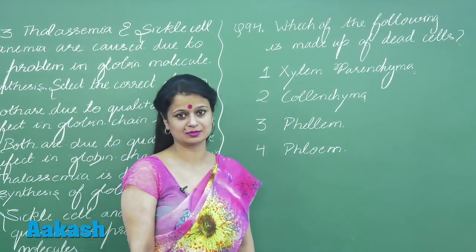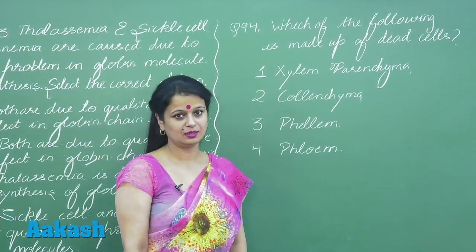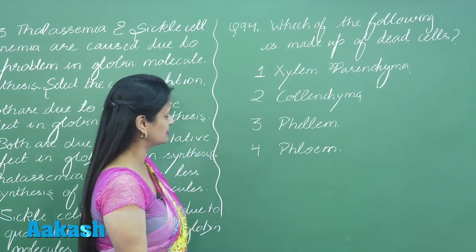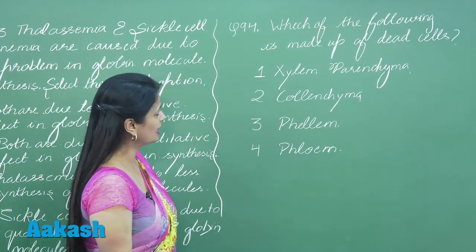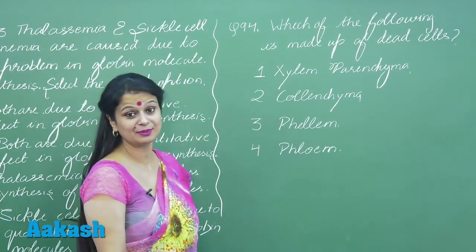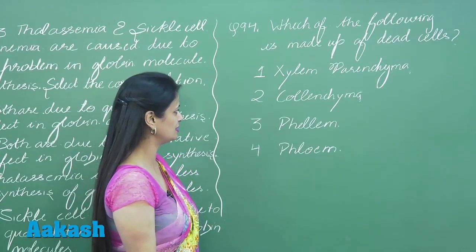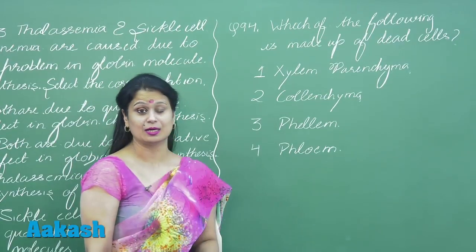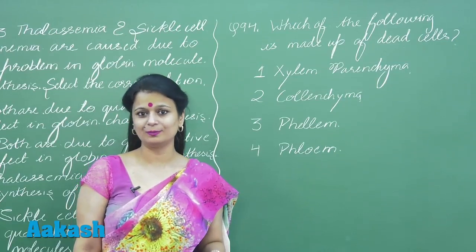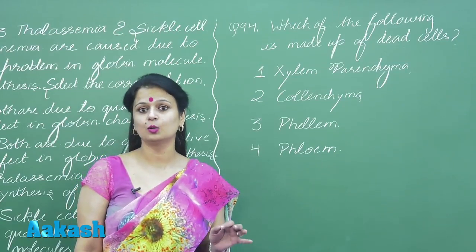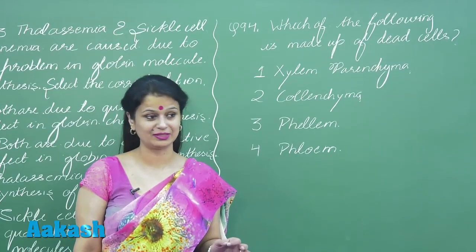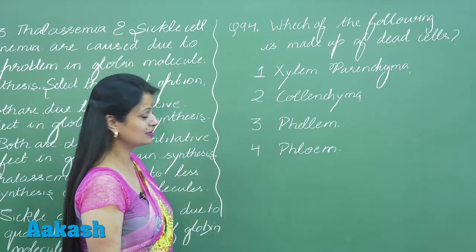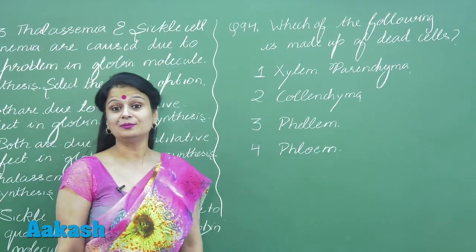Now question 94 — a very simple question. We have to identify which of the four options represents a dead cell. Xylem parenchyma is a living tissue. Colenchyma is thick-walled, but it is also a living tissue.